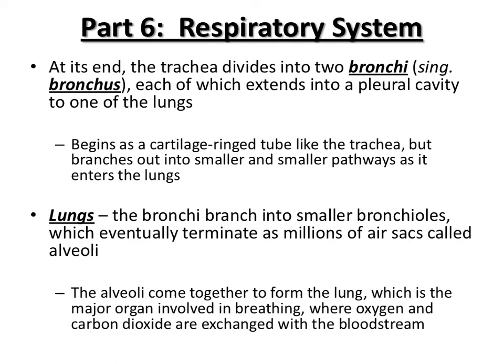At the end of the trachea, it will divide into two tubes called bronchi — singular: bronchus. Each of these will extend into one of those pleural cavities and branch out into the lungs. The bronchi start as cartilage-ringed tubes, just like the trachea, but then become smaller and smaller pathways and that cartilage goes away, becoming soft tissue. Each bronchus branches into smaller tubes called bronchioles, and those bronchioles terminate as millions of air sacs called alveoli. You probably won't see alveoli in your specimen — you'll definitely see the trachea and find the lungs, but the branching gets really tiny and microscopic.